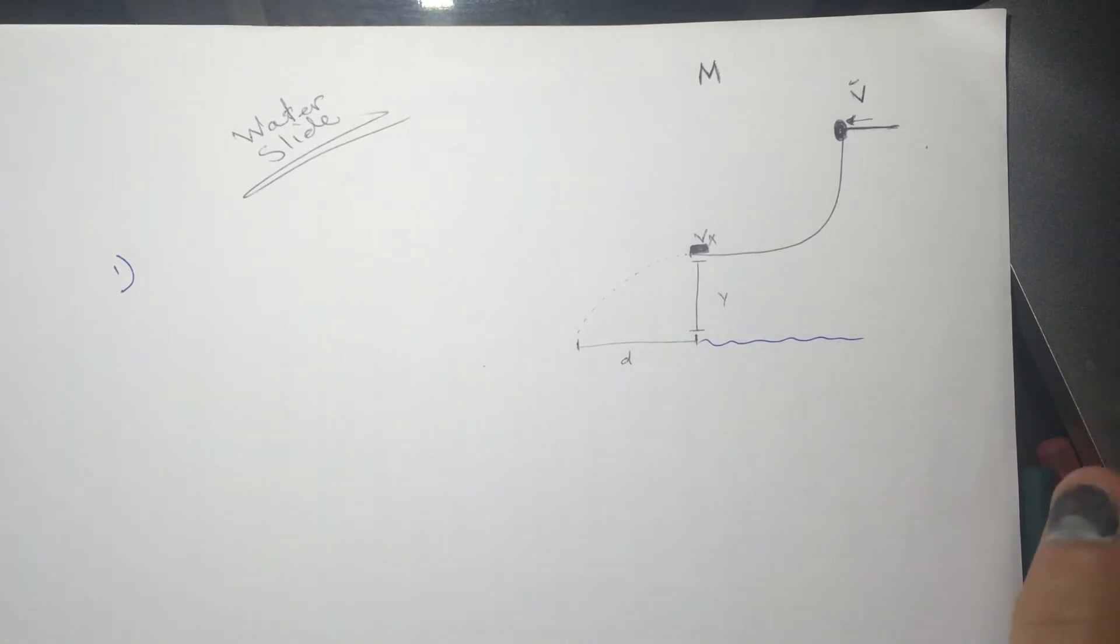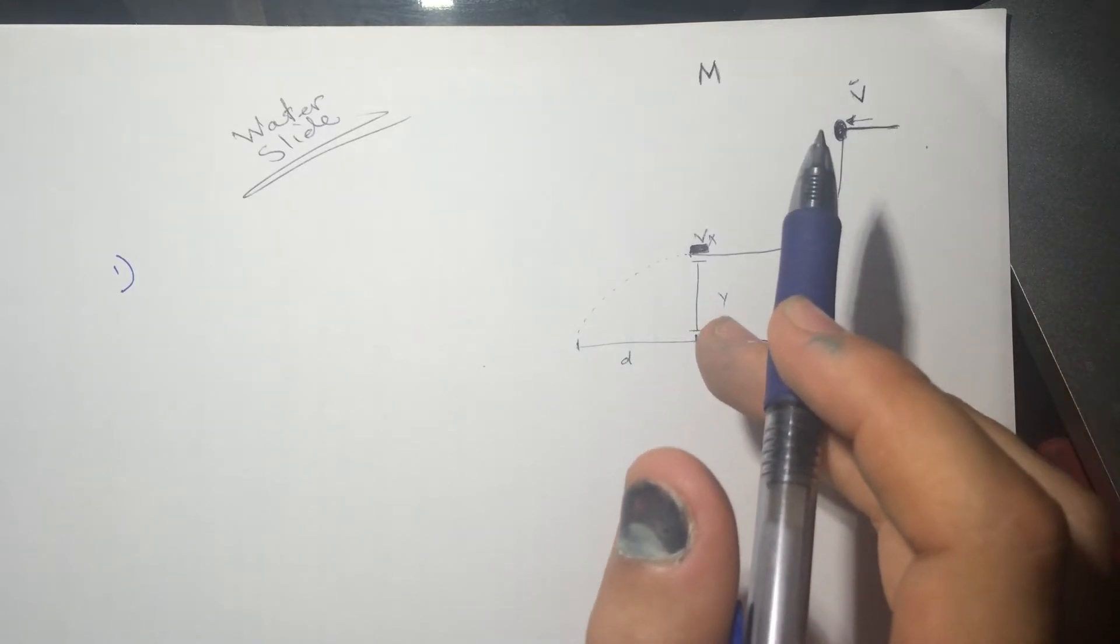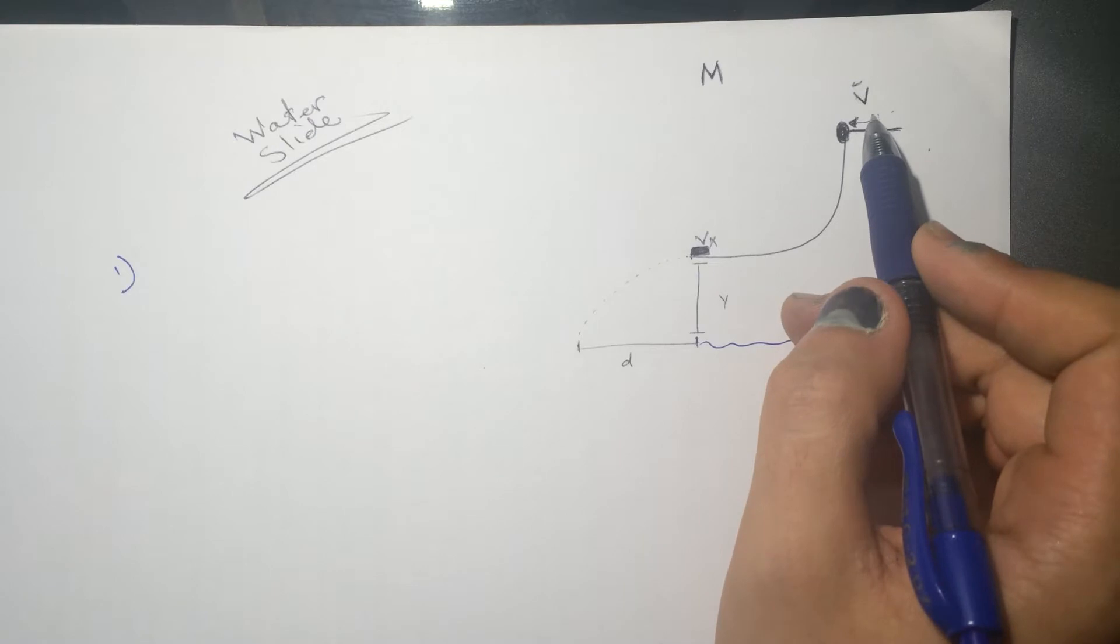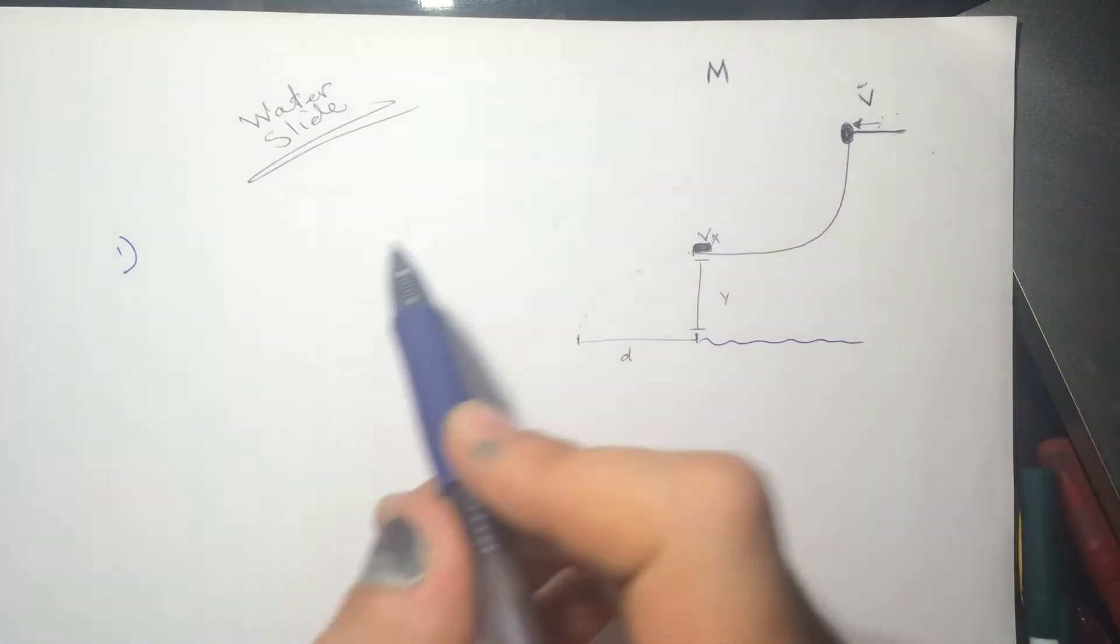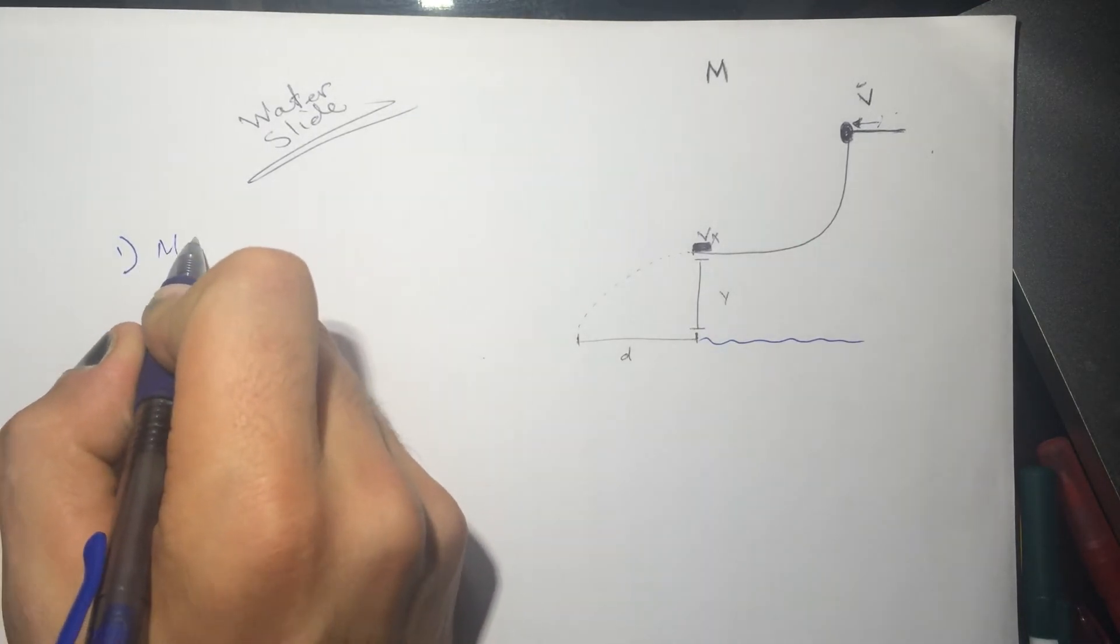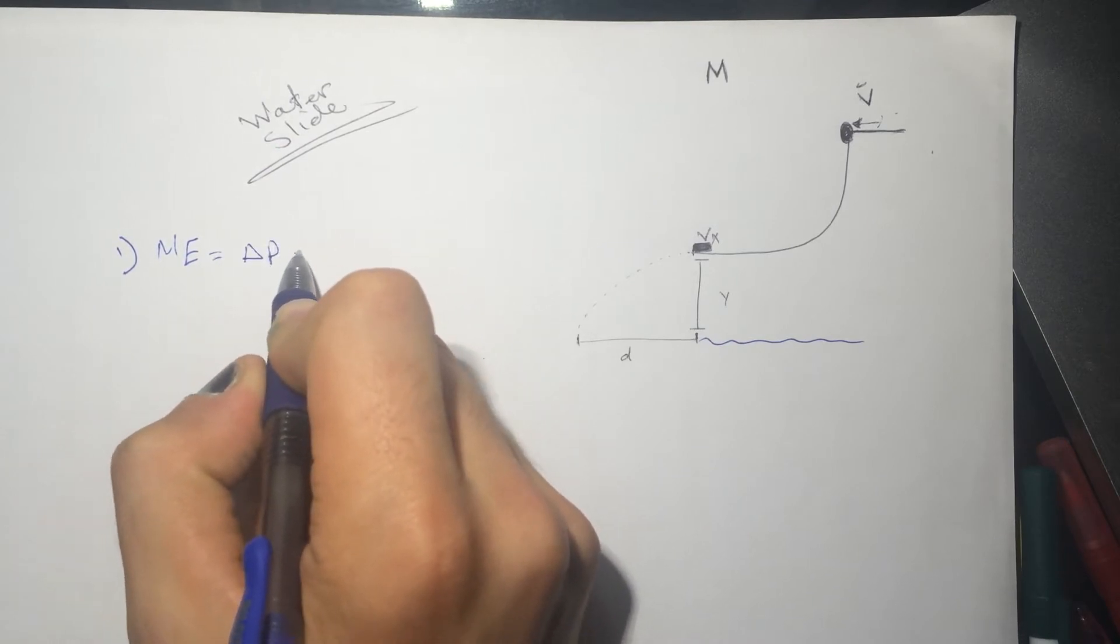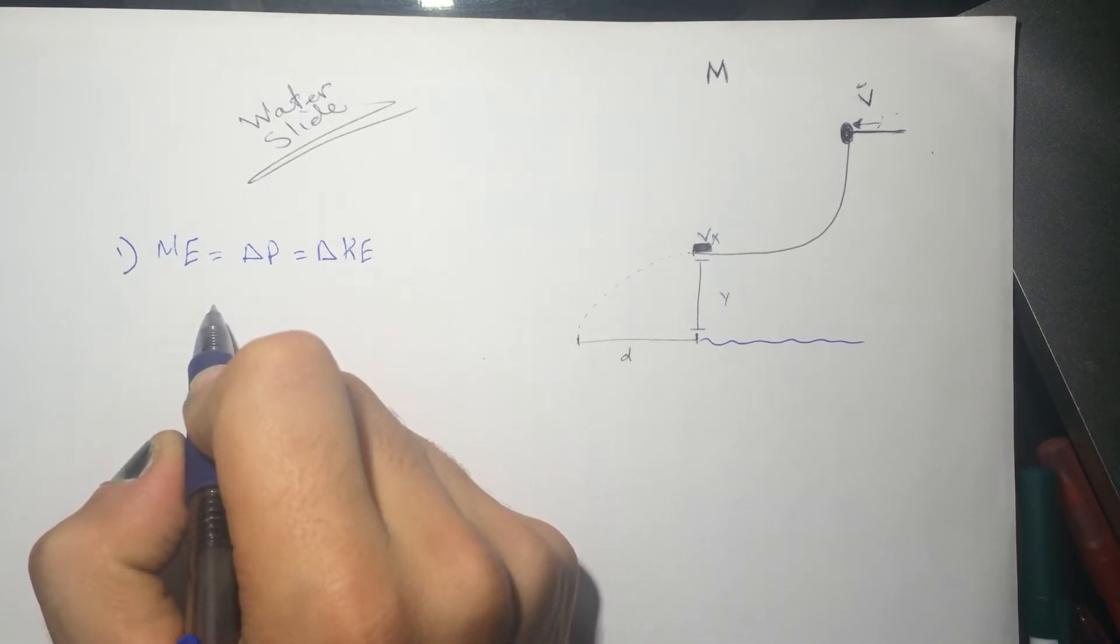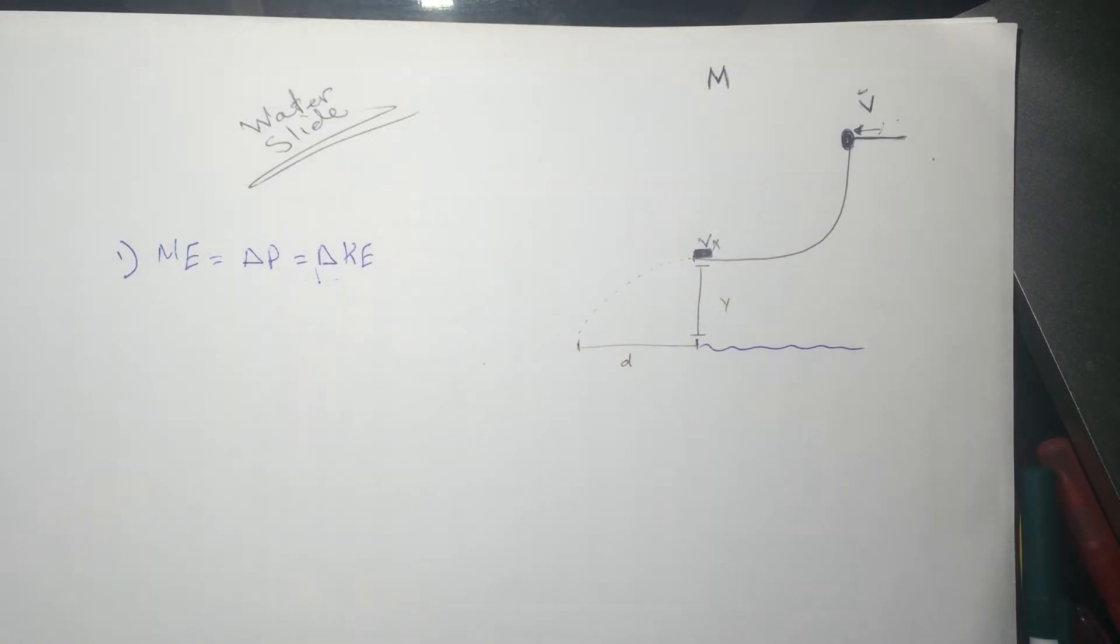So they're asking us what's the mechanical energy from the top to the bottom. They want the mechanical energy of the child at the top. Well, the mechanical energy doesn't really change. So you can either use it as a change of potential or change in kinetic energy. I'll use the changing kinetic energy.